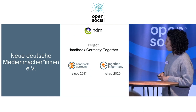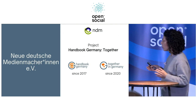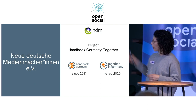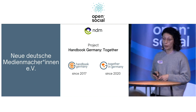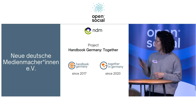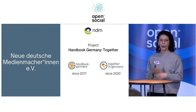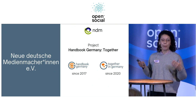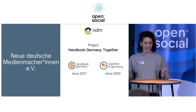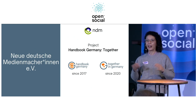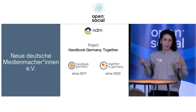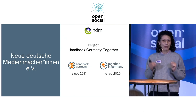The project as a whole is named Handbook Germany Together, composed of two parts: Handbook Germany and the community platform. Handbook Germany was born in 2017, born of the idea to provide migrants and refugees with information about Germany. Germany is well known for having a very good social system, but also a very bureaucratic and complex system.